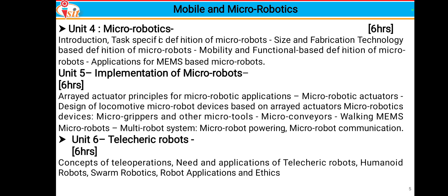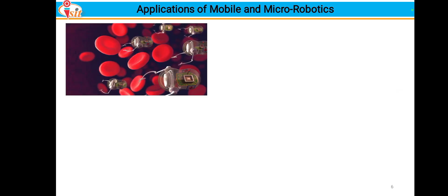Unit 6 is related to teleoperation robots, covering the concept of tele-operation, the need and applications of teleoperation robots, humanoid robots, swarm robots, and robotic applications and ethics. This completes the syllabus of Mobile and Micro Robotics, and now we will look at some applications.